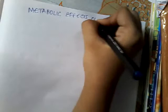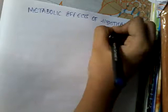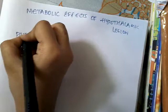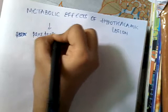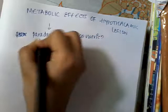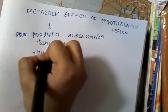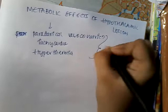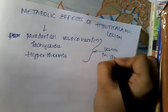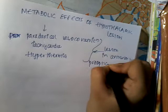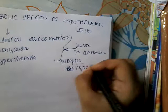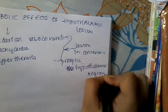Now let us learn about the metabolic effects of hypothalamic lesions. These include paradoxical vasoconstriction, tachycardia, and hyperthermia. All these occur when there are lesions in the anterior and pre-optic hypothalamic regions. A hemorrhagic insult to the hypothalamus can also cause acute hyperthermia, since the hypothalamus is an important region for temperature regulation.